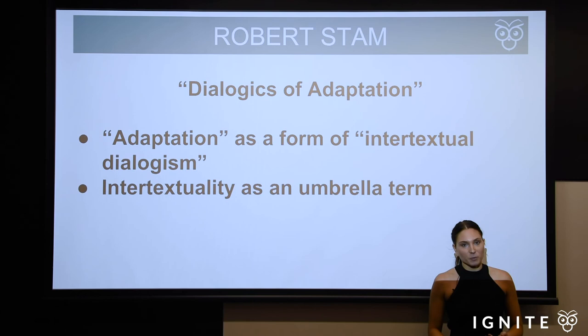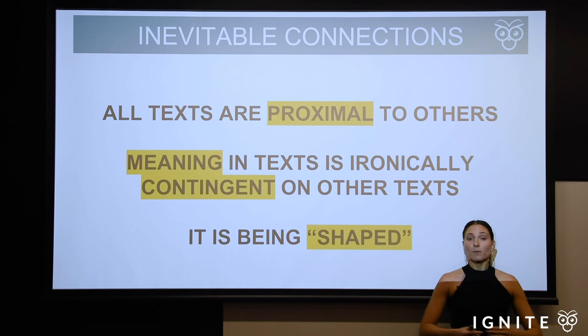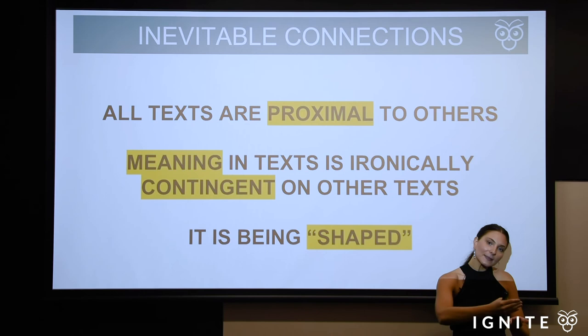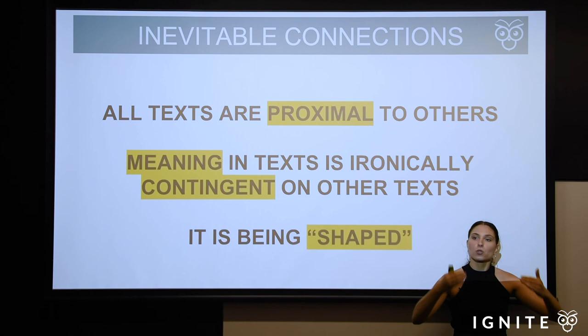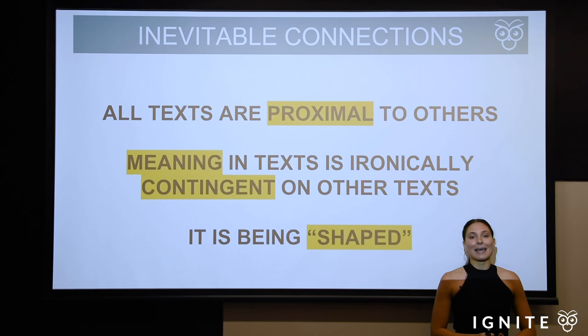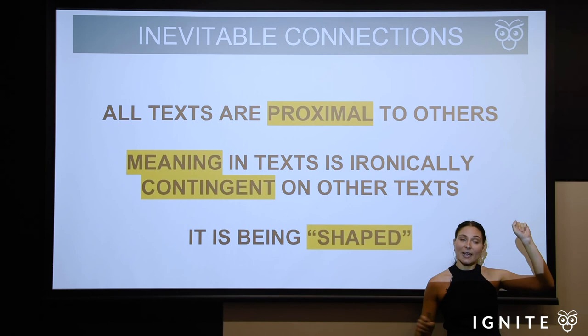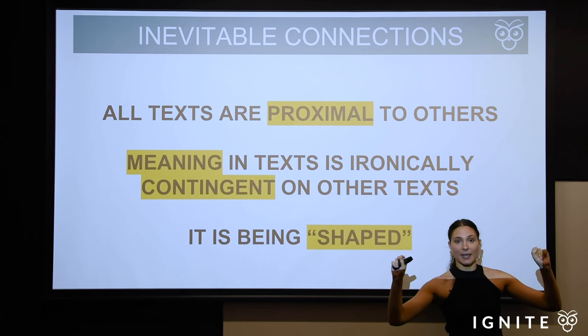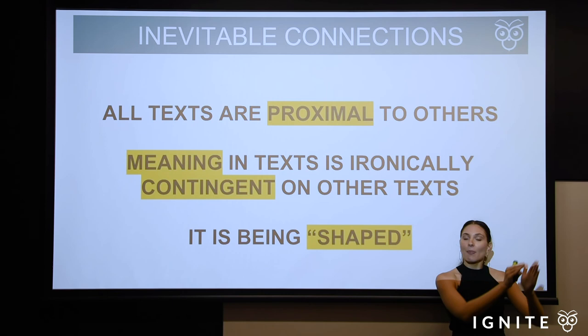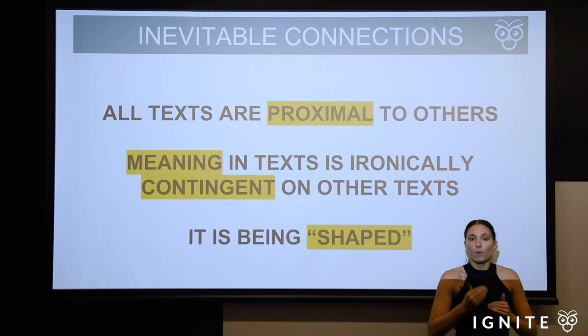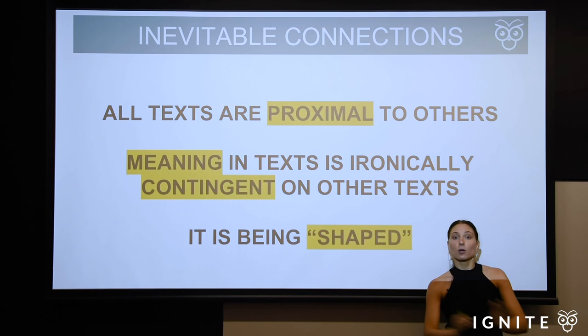The takeaway point I'd like you to consider is that all texts are proximal to others — all texts are relating to them, whether they intend to or not, because texts have been around for so long. Furthermore, meaning in text is fluid rather than fixed. If you're studying two texts and you've read an original text and then looked at an adaptation, the understanding you extracted from the first text — through looking at a reframing of it through another text — will deepen and change what you thought of that original text. That's the prime example of intertextuality: meaning is reconfigured and transformed when you engage with other texts.